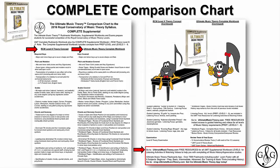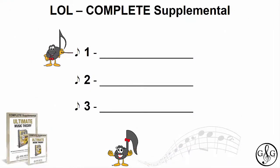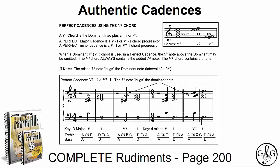LOL Complete Supplemental starts with number one: learn master techniques for melody writing. We'll start with the Complete Rudiments Workbook on page 200, where you're learning about the V7 chord — a dominant triad plus a minor 7th — as used in an authentic cadence. When a dominant 7th chord is used in a perfect cadence, now referred to as an authentic cadence, the 5th note above the dominant may be omitted. In an authentic cadence, when the V7 chord is used, the 7th note hugs the dominant note.